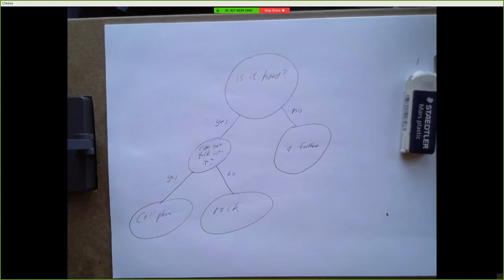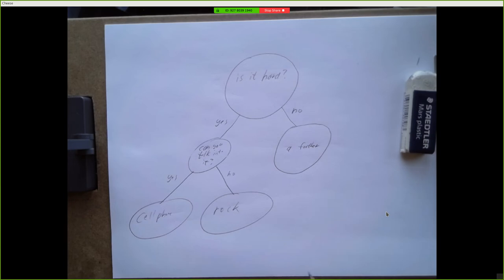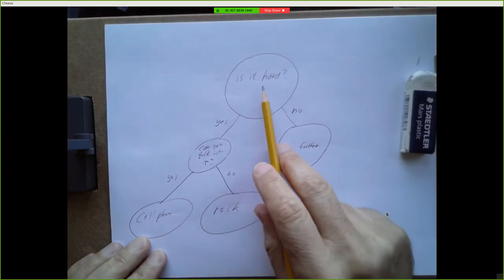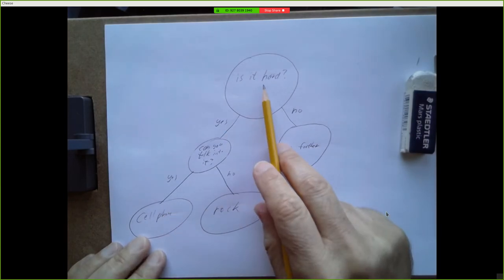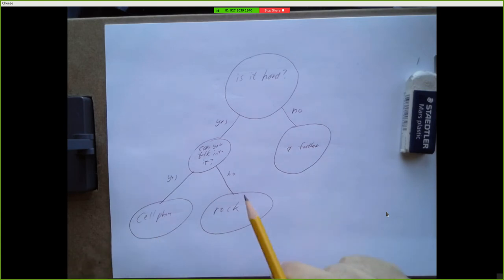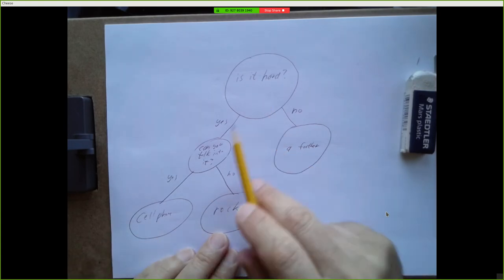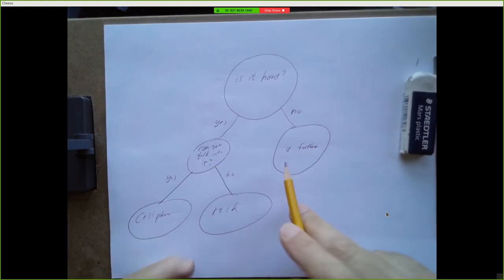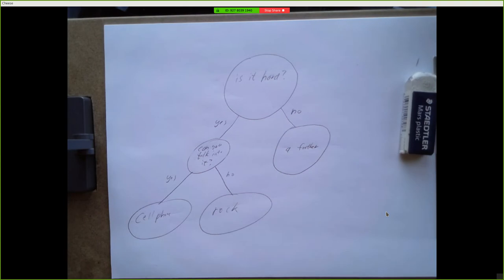The next time you play the game, if you're thinking of a cell phone, it will be able to guess it — 'Is it hard? Yes. Can you talk into it? Yes. It's a cell phone.' If you're thinking of a rock it'll guess that correctly. If you're thinking of a feather it won't yet be able to guess that.